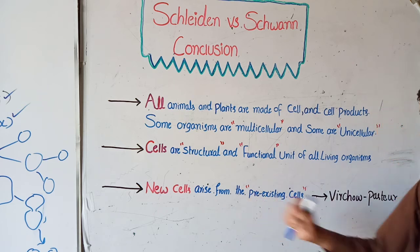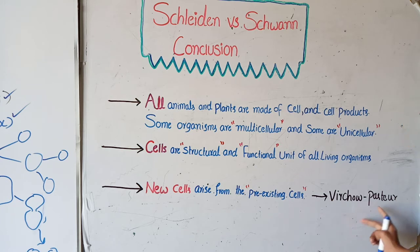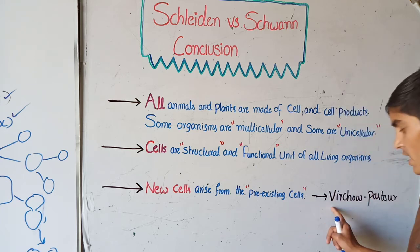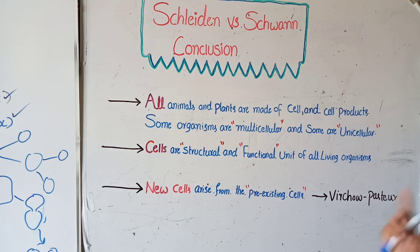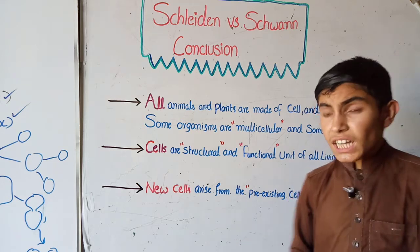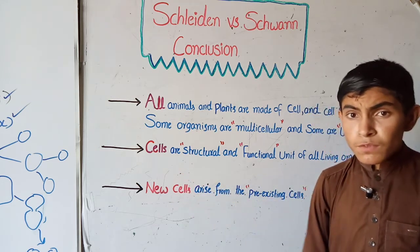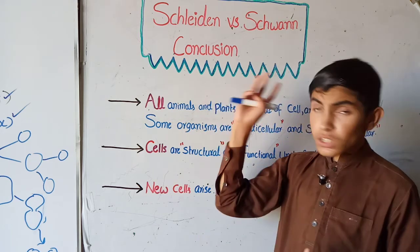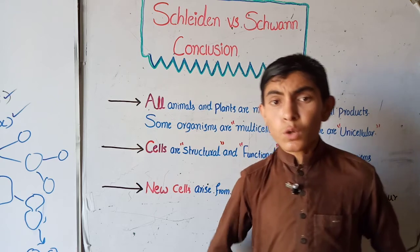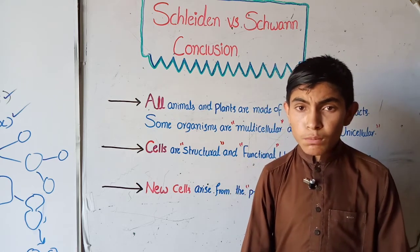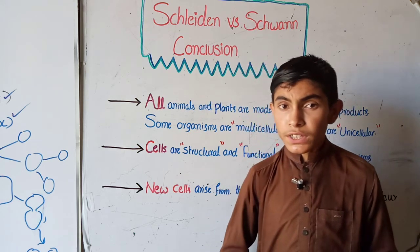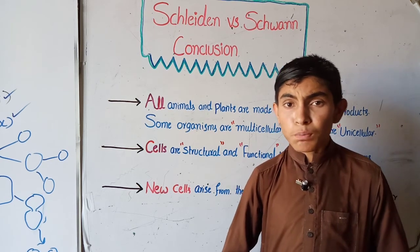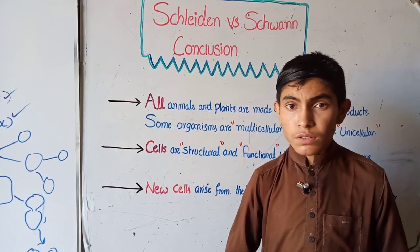The third step of their conclusion says that new cells arise from pre-existing cells. This step supports the work of Rudolf Virchow and Louis Pasteur, who said that new cells arise from pre-existing cells. Pasteur performed the experiment of cell division on a bacterial cell and proved that a new cell arises from a pre-existing cell. This was all about cell theory and the conclusion of Schleiden and Schwann. I hope this lecture will be helpful to you. In the next lecture we will talk about the cell and cell organelles. Please subscribe and share, and press the bell icon to receive updates. Thank you very much.